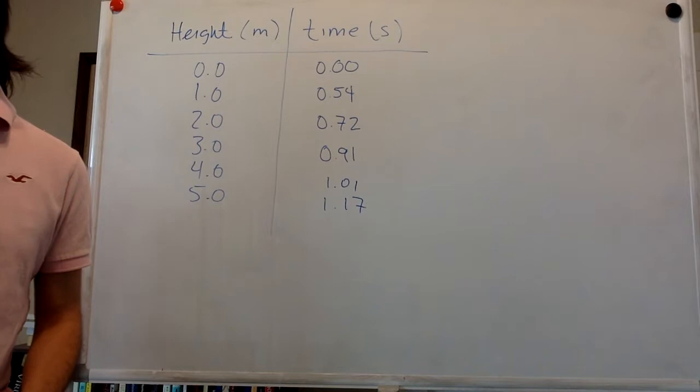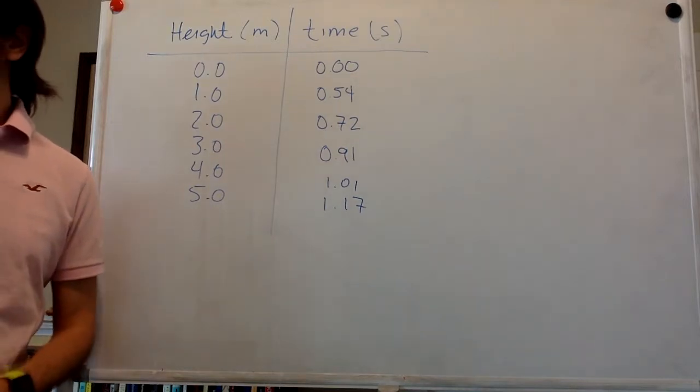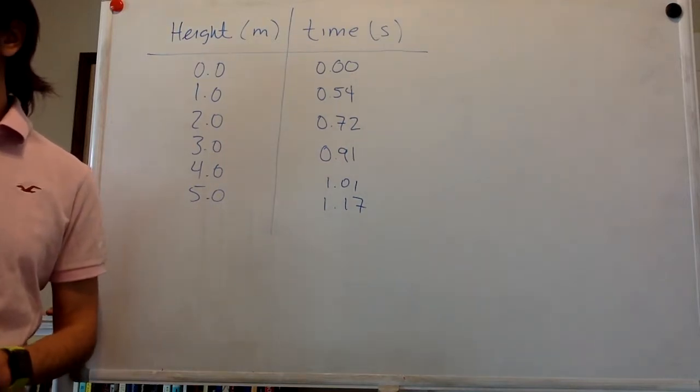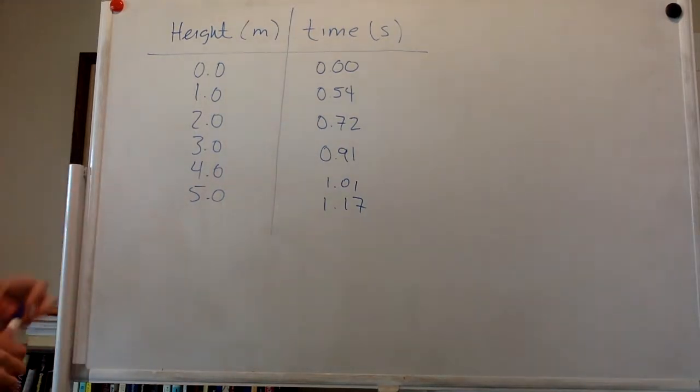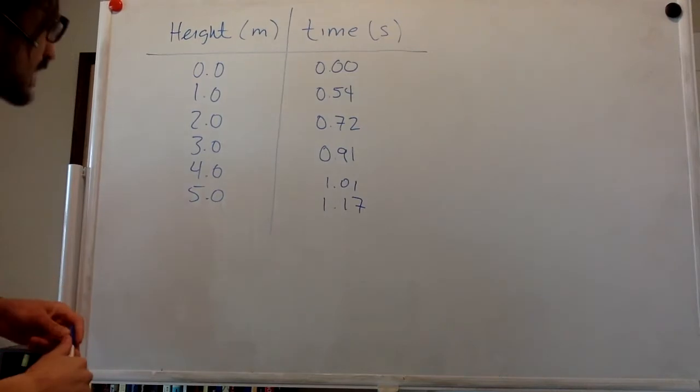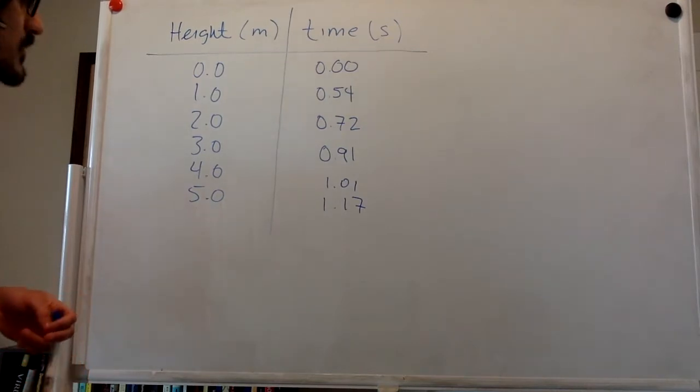Analyze the data to find the free fall acceleration. The analysis method involves fitting a straight line to the appropriate graph. So this problem, you can actually solve it in several ways.